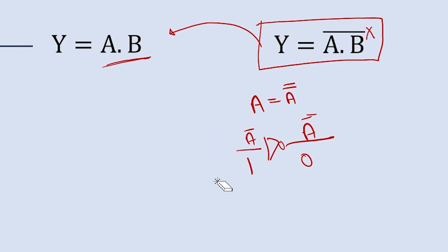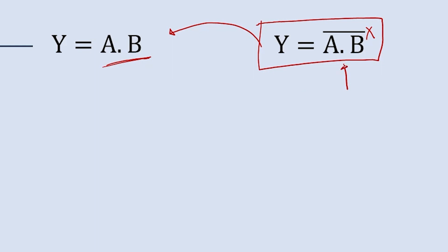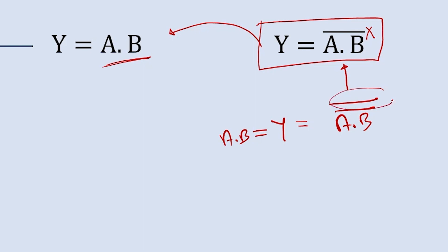Using this double-bar logic, we modify the equation: Y = (A·B)̄ — we apply one more bar to get Y = (A·B)̄̄ = A·B. That additional bar represents a NOT gate. We have already shown how to create a NOT gate using a NAND gate, so we can use that here.